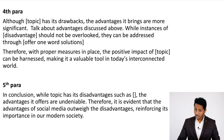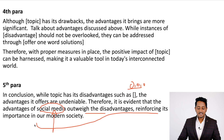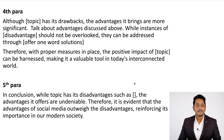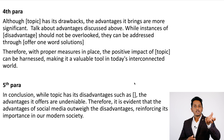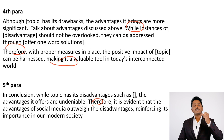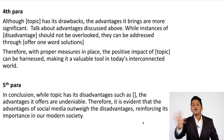The fifth paragraph is the conclusion: 'In conclusion, while [topic] has its disadvantages such as [two or three words from the third paragraph], the advantages it offers are undeniable. Therefore, it is evident that the advantages of [topic] outweigh the disadvantages, reinforcing its importance in our modern society.' The template deliberately uses gerunds and specific connectors — although, despite, while, therefore — placed in a way that fixes all your coherence and cohesion issues, which is the primary reason many people score 6.5.